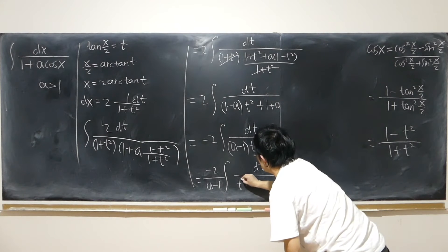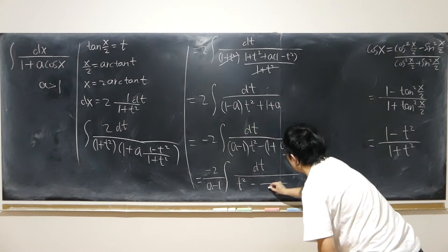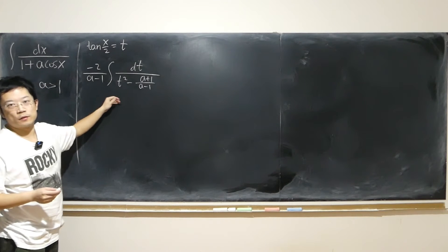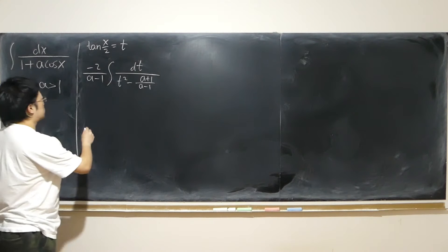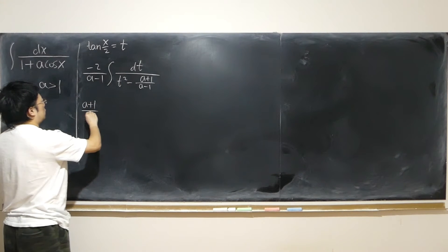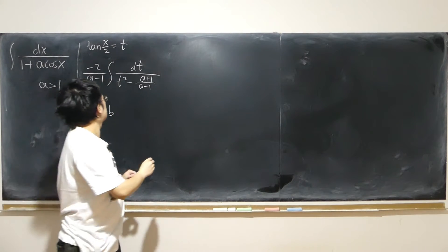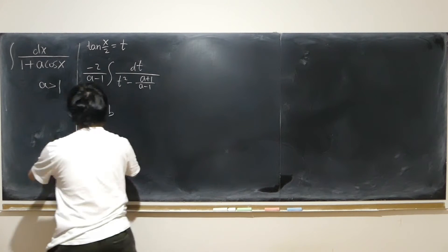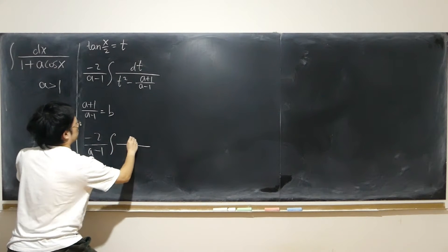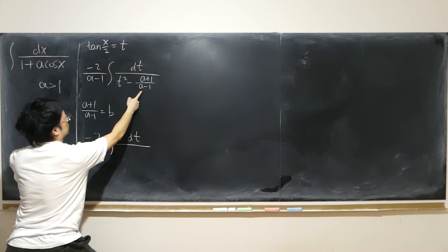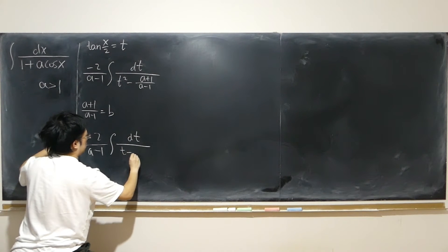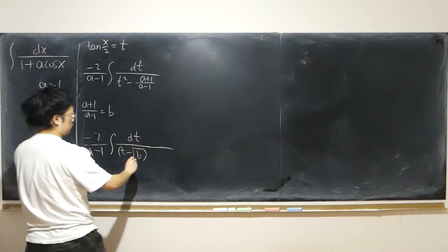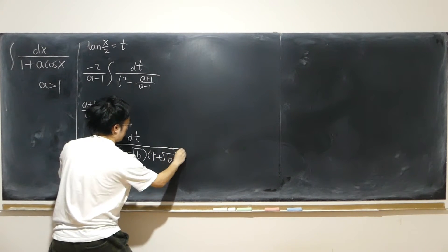So I have negative 2 dt over (a minus 1) times [t squared minus (a plus 1)/(a minus 1)]. I let b equal (a plus 1)/(a minus 1), so the denominator factors as (t minus sqrt(b)) times (t plus sqrt(b)).